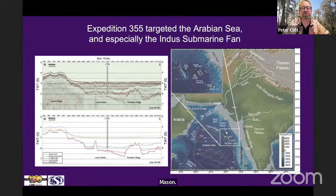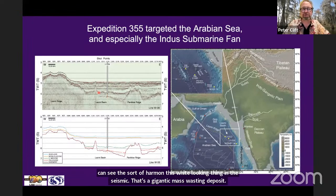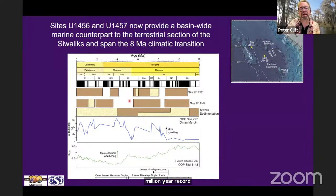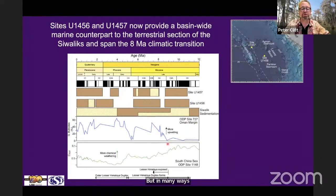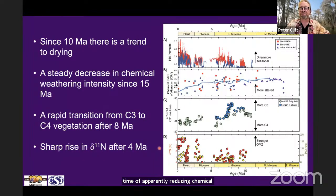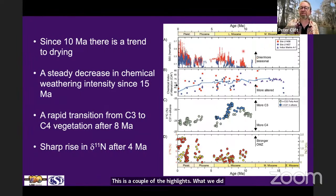It was slightly disrupted by a gigantic mass wasting deposit, which disrupted the nice sequence of turbidites that we had hoped to collect. Nonetheless, we were able to derive an 11 million year record, spanning with some hiatuses, particularly around 5 million years ago. We got a record that went back to around 11 million years, which was enough to look at the transition that Dick Kroon had seen years ago, as well as the trend to more upwelling at that time, which also is a time of apparently reducing chemical weathering that we saw in southern China.